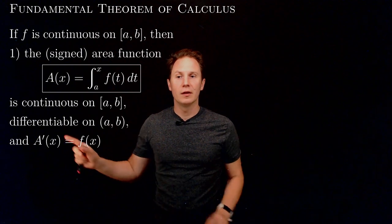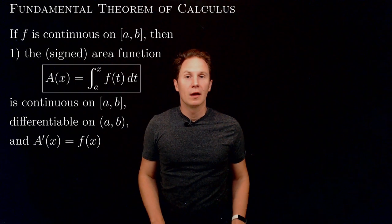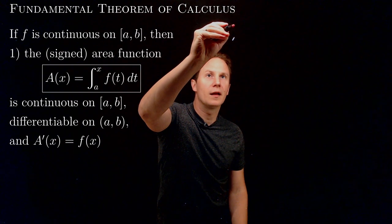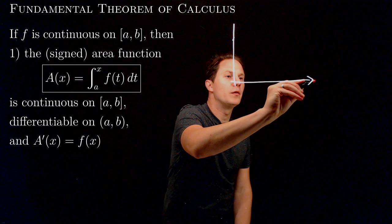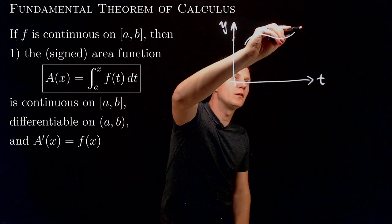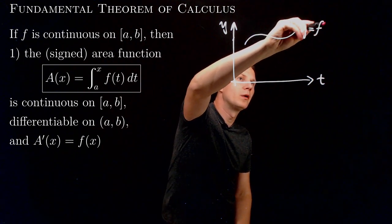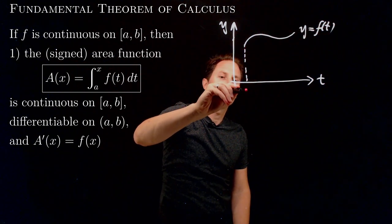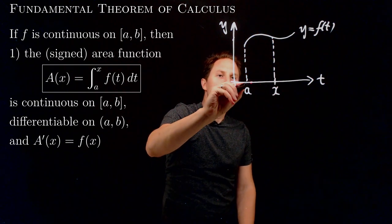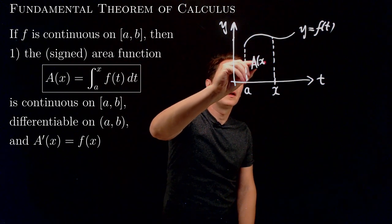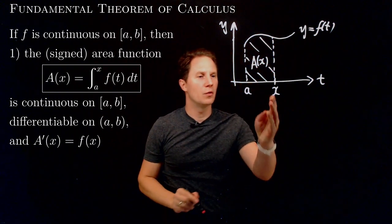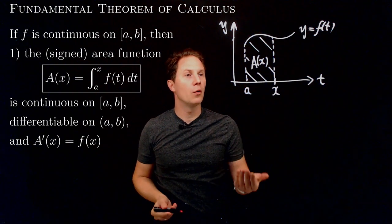So in this sense, differentiation undoes integration. The intuition behind the first part of the fundamental theorem is quite nice. It says that if we take the graph of the function f between two points — here I'm using the variable t on purpose — the two points are a, which we keep fixed, and x, which we let vary. This signed area we call capital A of x; it's a function of x, and as we change the right-hand point of this interval, this value also changes.